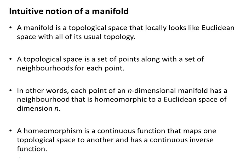A topological space is a set of points along with a set of neighborhoods for each point. Each point of an n-dimensional manifold has a neighborhood that is homeomorphic to a Euclidean space of dimension n. A homeomorphism is a continuous function that maps one topological space to another and has a continuous inverse function.